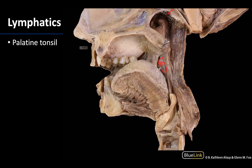It will sit in the tonsillar fossa located between the palatoglossal fold and the palatopharyngeal fold here. That tonsillar fossa is formed by the superior pharyngeal constrictor and the pharyngeal basilar fascia, but we can't really see those portions because of this fairly robust palatine tonsil here.